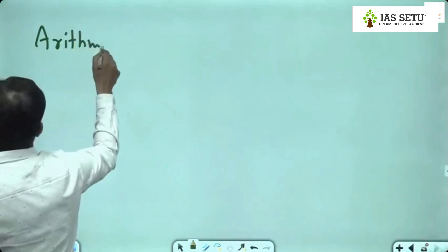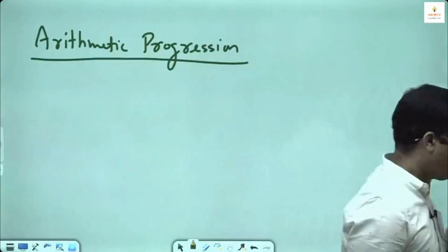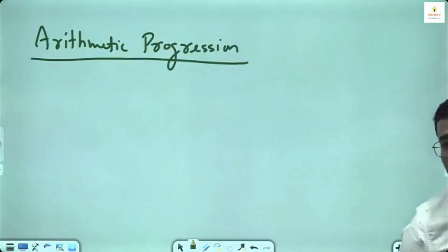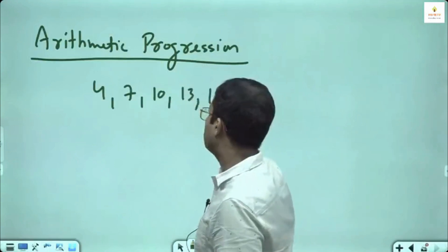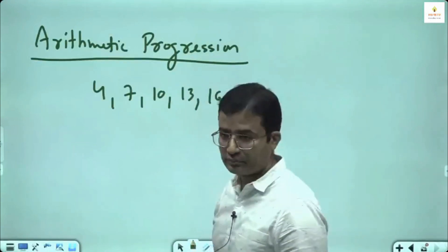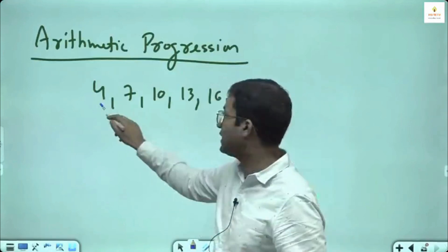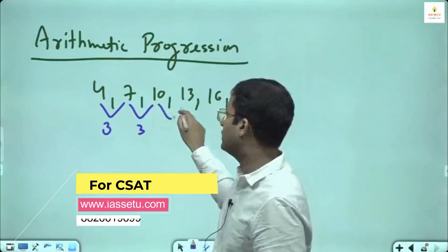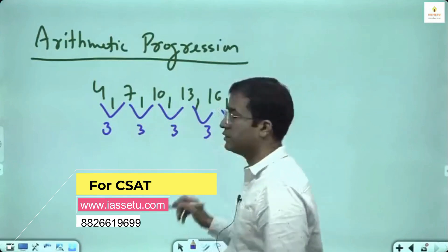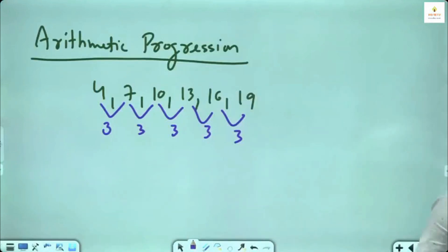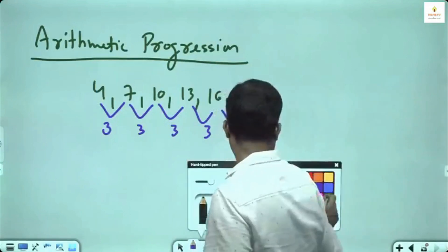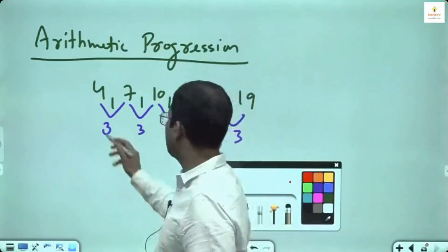Arithmetic progression is a sequence where your difference is constant. I give an example like 4, 7, 10, 13, 16, 19. You take the difference of first and second term, this is 3. Second and third term, 3. So here we have a difference of 3, 3, 3, 3, 3.